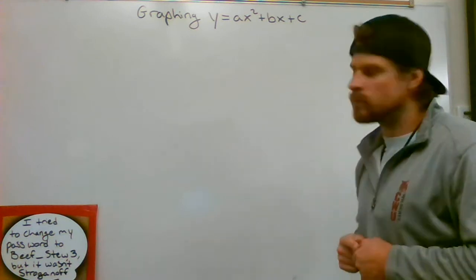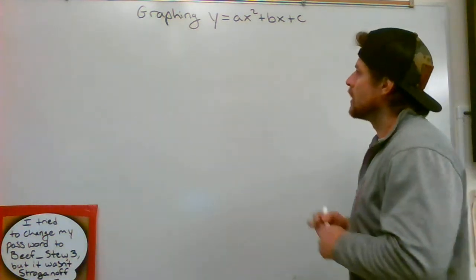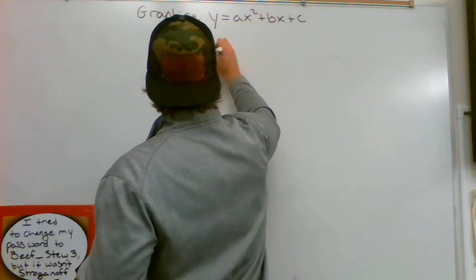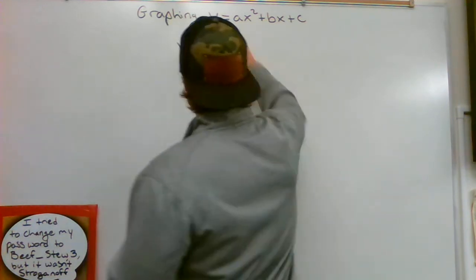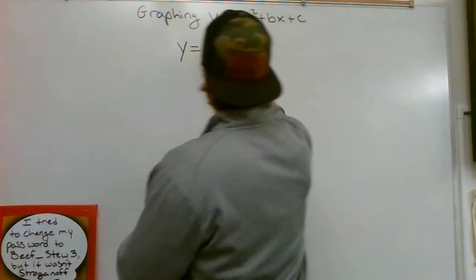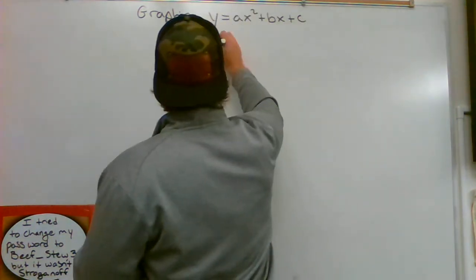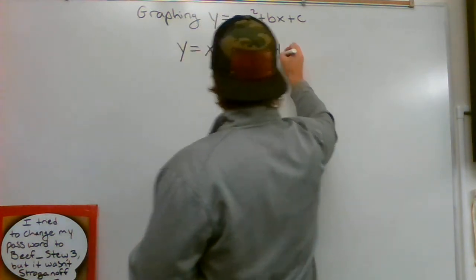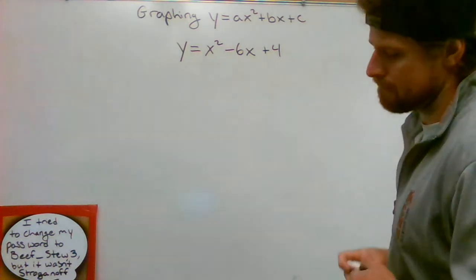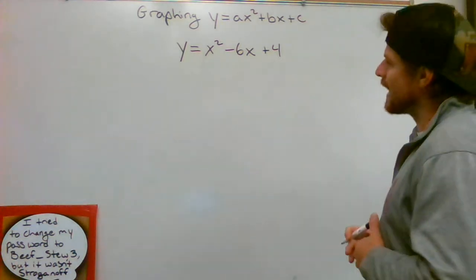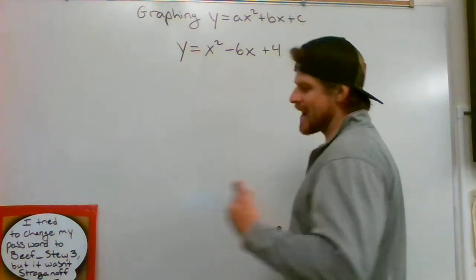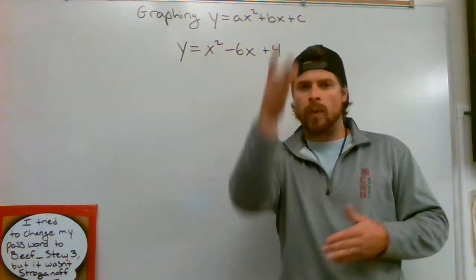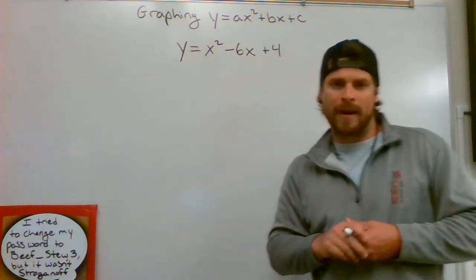So here we go. Buckle up. Let's go. y equals x squared minus 6x plus 4. If I'm asked to graph that, I need to first start by finding my axis of symmetry. Nothing can happen until I know where is my middle mark of my parabola.